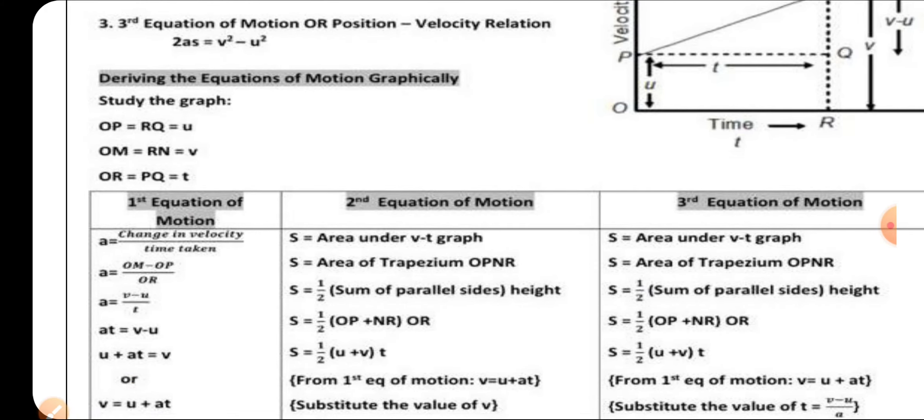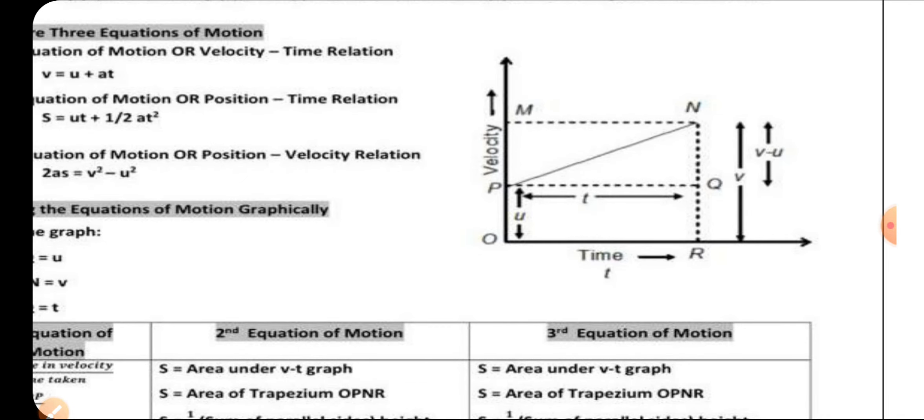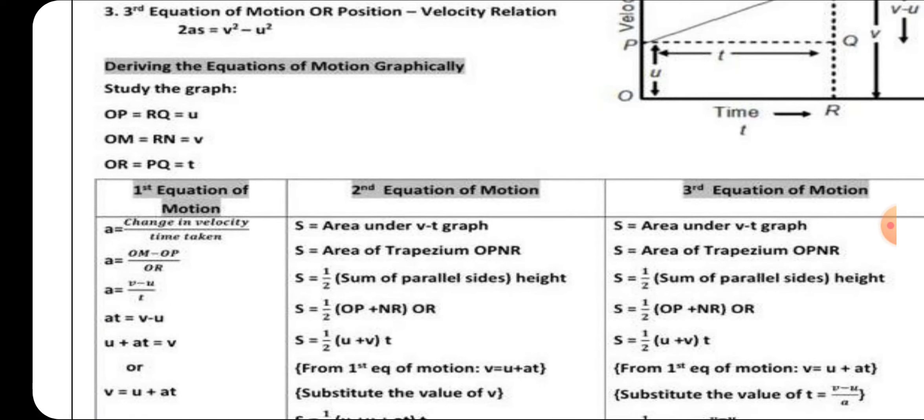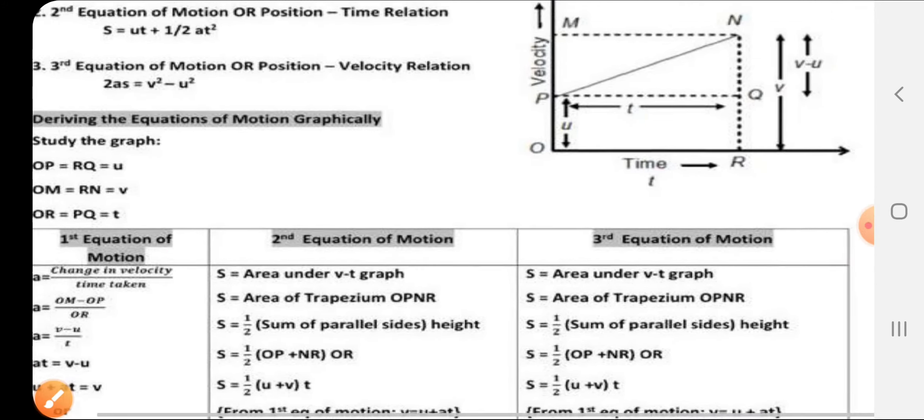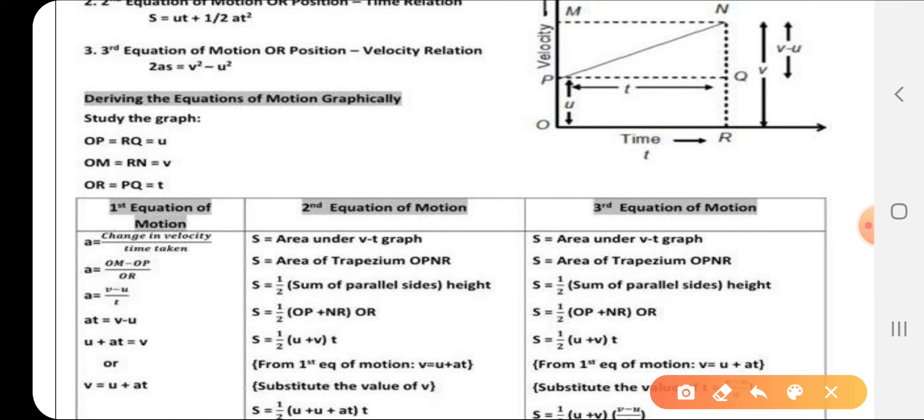We know that acceleration is change in velocity per unit time taken. How much did velocity change? If we look, the final velocity minus the initial velocity will give us how much the velocity changed. This change in velocity is v - u.